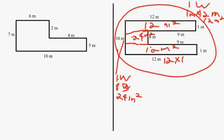To get your final answer, you add up the 3 boxes areas and you get 12 plus 24 plus 12 equals 48 meters squared.